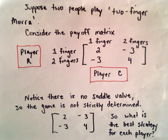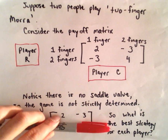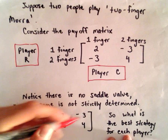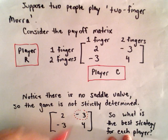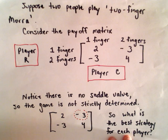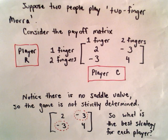So one thing to point out is there is no saddle value, and let's look at that real quick. So if you think about player R selecting a row, in the first row, the worst thing that could happen would be player R would have to pay $3. The same thing in the second row, the worst thing that could happen would be to pay out $3.